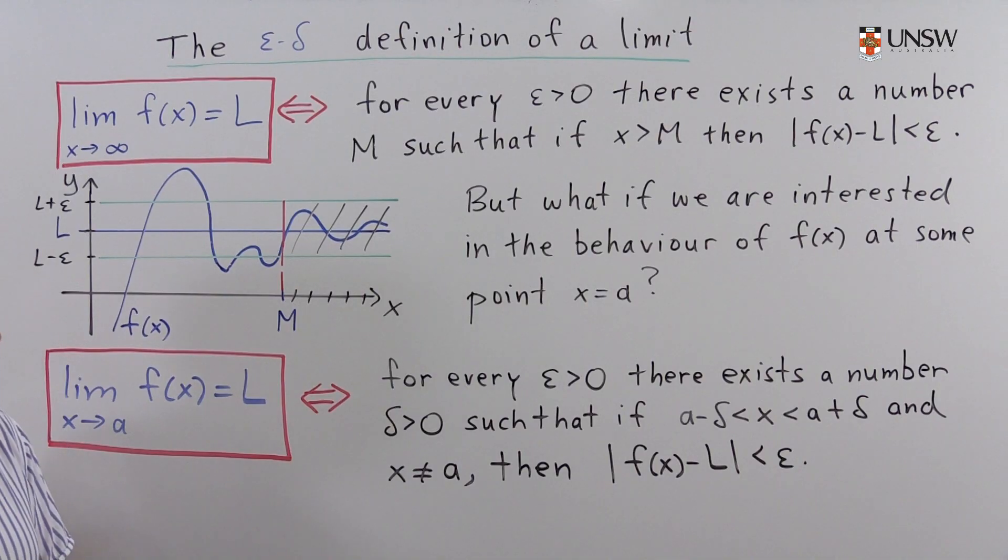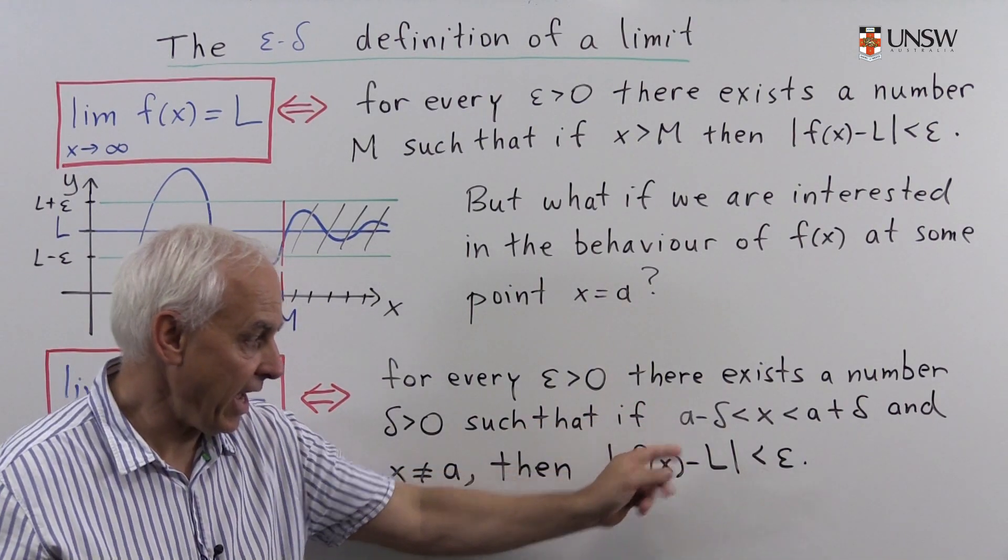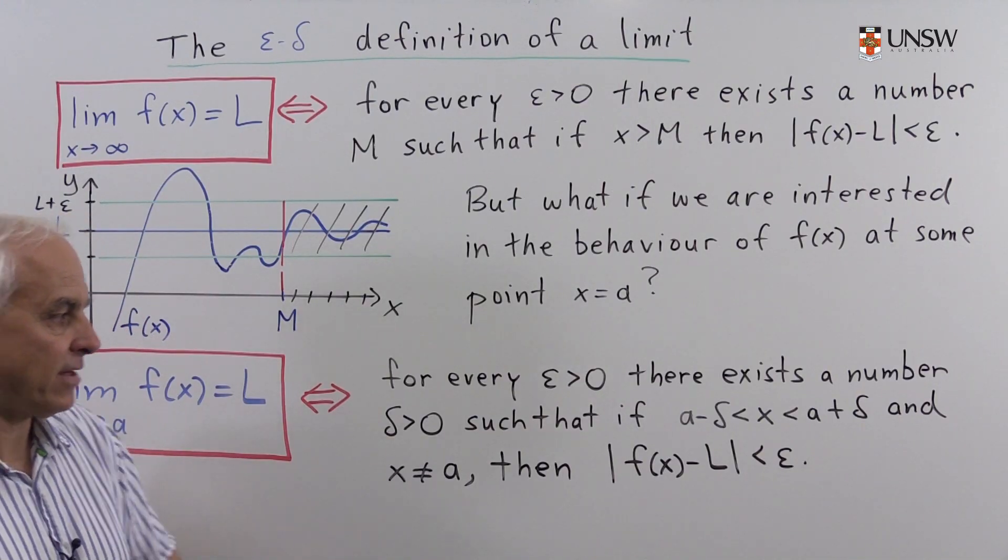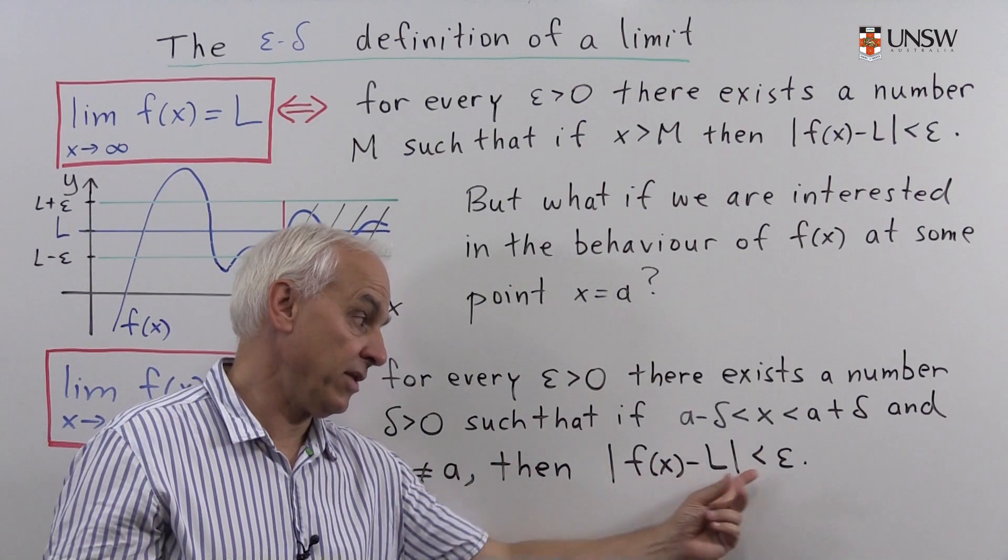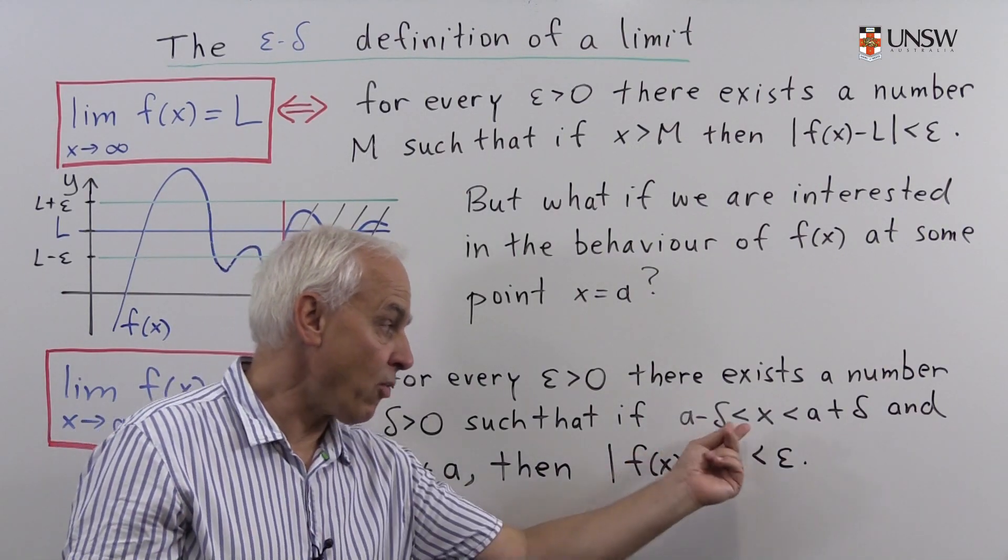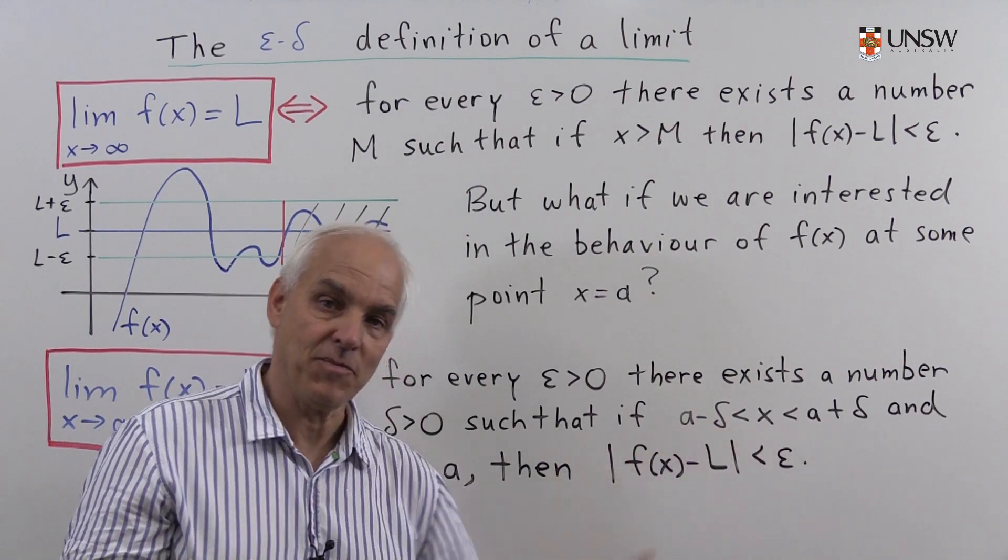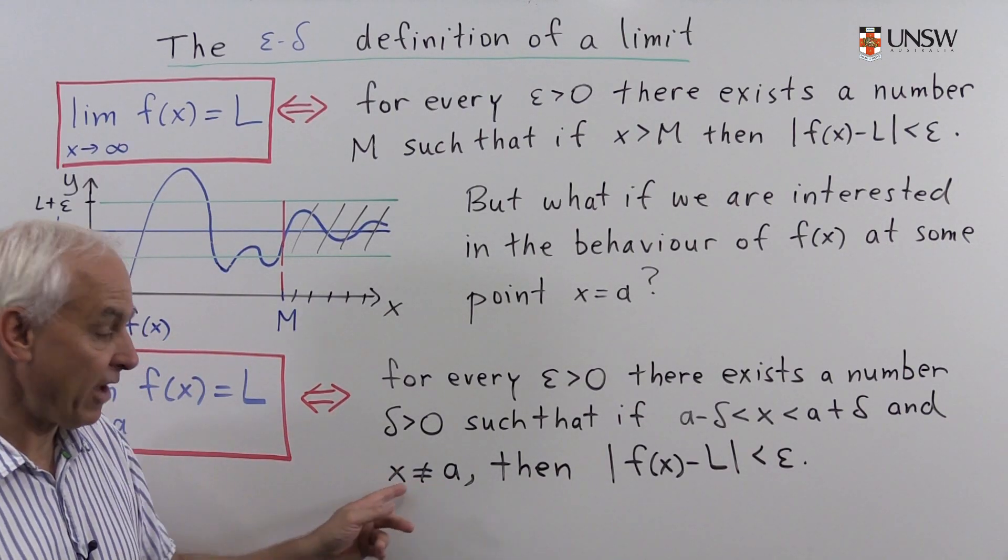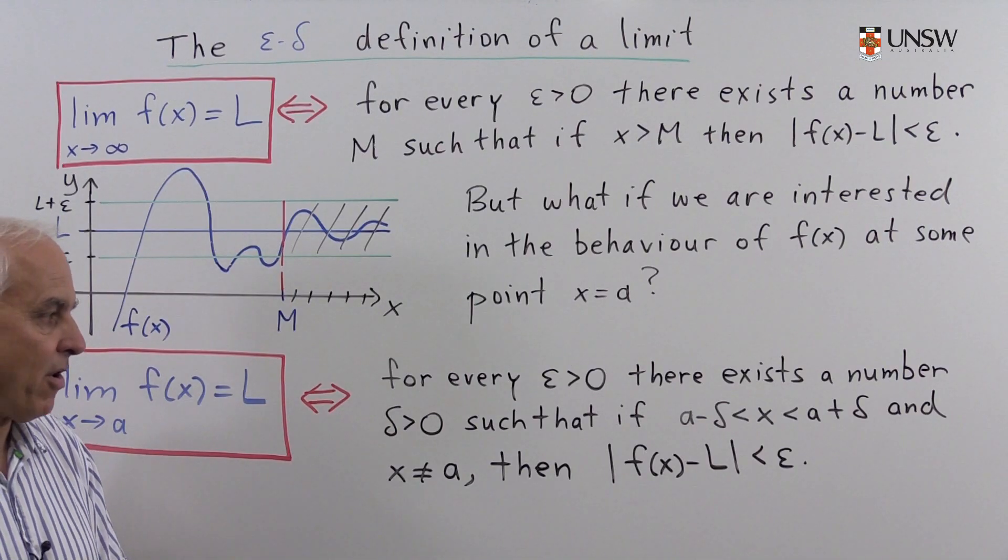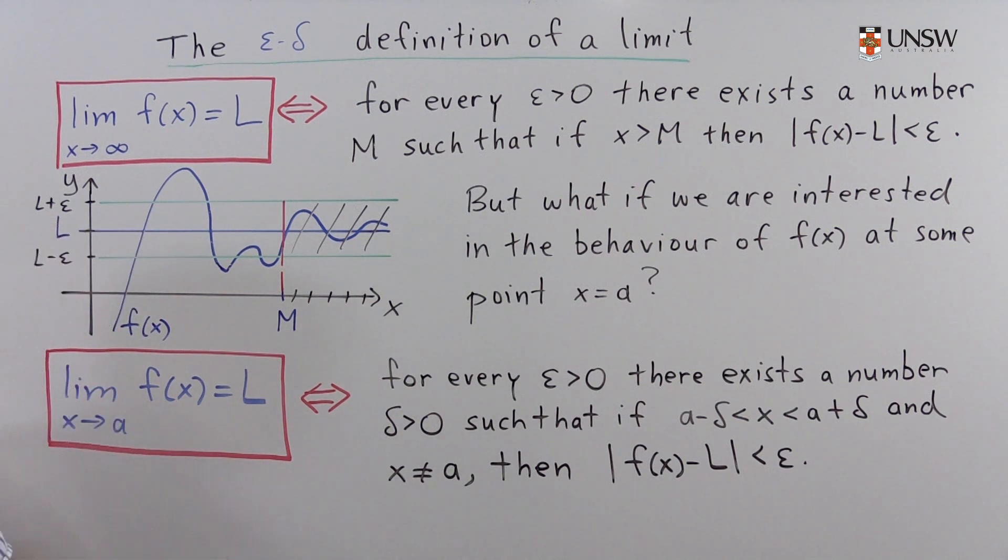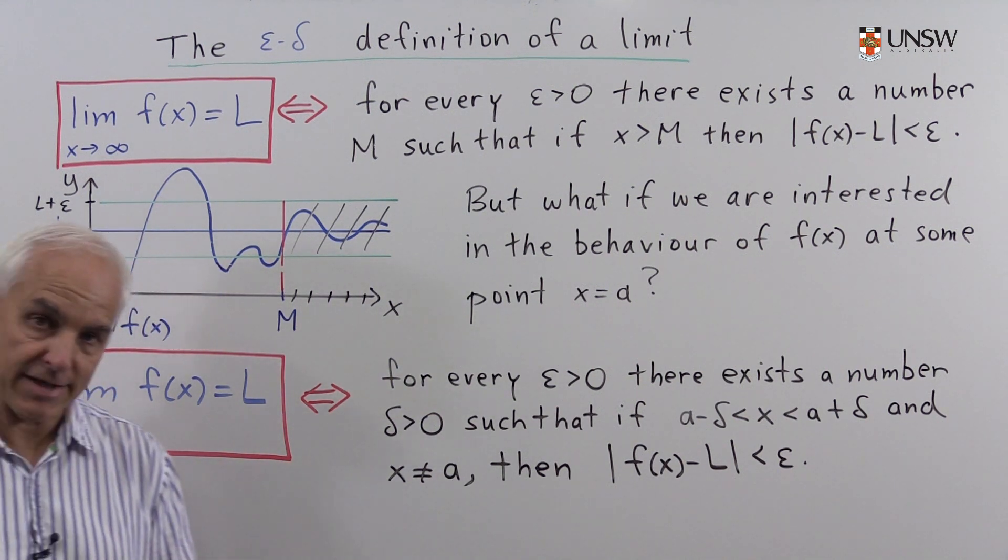You can say it in words that as x approaches A, f of x approaches L. And we're interpreting that to mean that if we want f of x to be within epsilon of L, we can guarantee that by requiring that x is within delta of A. But we note that the actual value of the function at A is not actually part of the story. So this is the official epsilon-delta definition of what it means. Now let's have a look at how it translates in an example.